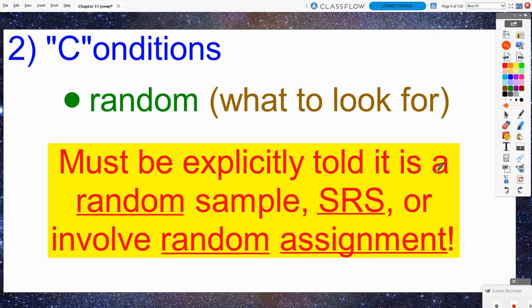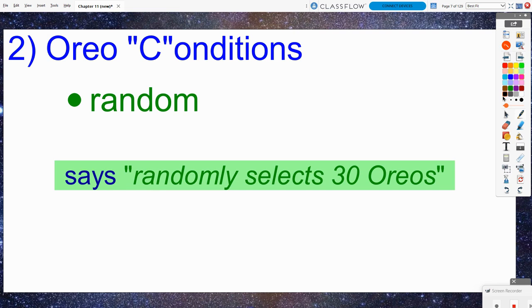Now, for the conditions, these are the same three conditions that we checked last chapter. Number one, random. We need to be on the lookout for a random sample, an SRS, or something involving random assignment. There's got to be some aspect of randomization. And in our problem, it said specifically that they were going to randomly select 30 Oreos, so the random condition has been verified.